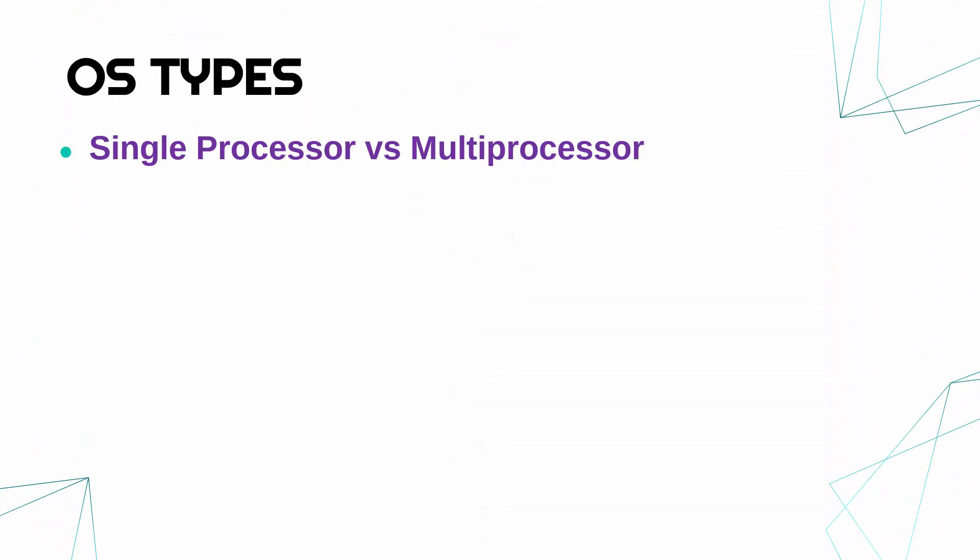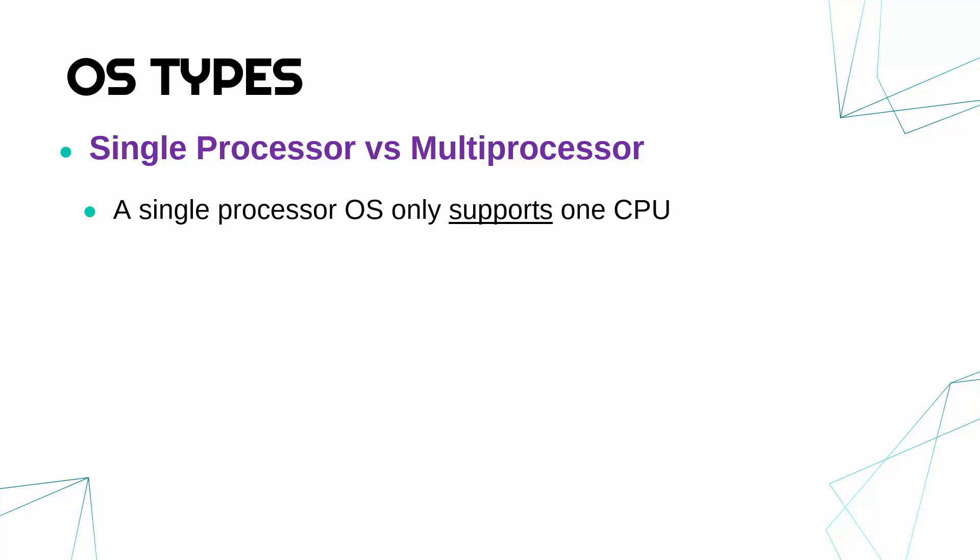Another concept — be careful not to mix these up — is single-processor versus multi-processor OSs, which is largely unrelated to single-user and multi-user despite sounding similar. A single-processor OS only supports one CPU. The CPU is the main device doing most of the processing in a computer. You might have multiple processors like a sound card or graphics card, but a single-processor OS only supports one CPU regardless of those other cards.